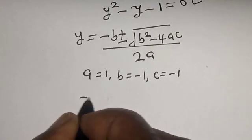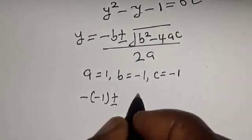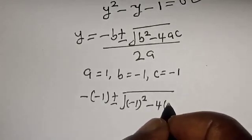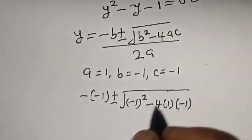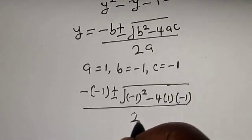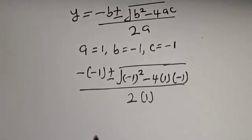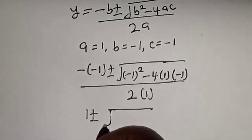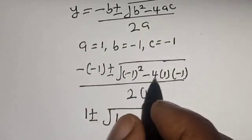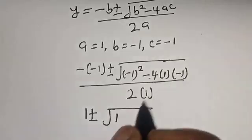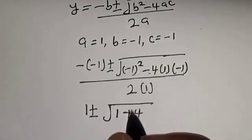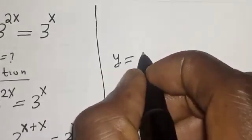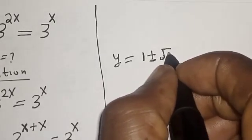So let's substitute. We have minus times minus 1, plus or minus square root of minus 1 squared minus 4 multiplied by 1 multiplied by minus 1, divided by 2 multiplied by 1. So we have 1 plus or minus square root of 1 minus 4 times minus 1. That is plus 4, over 2.